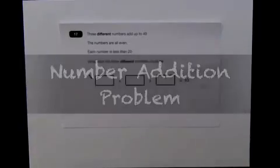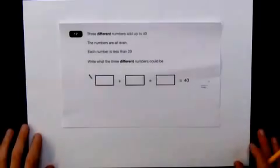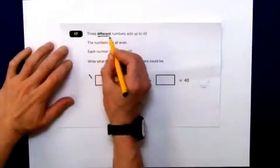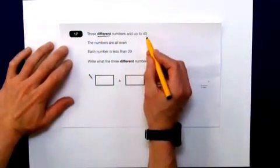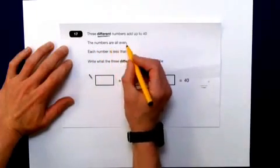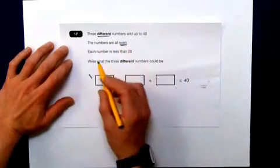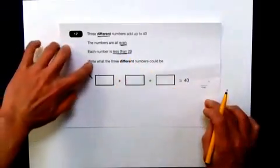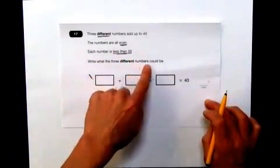This question's a good one as there are quite a few different possibilities. Let's read the question again though. Three different, again it's in bold, different numbers add up to 40. The numbers are all even numbers. Each number is less than 20.